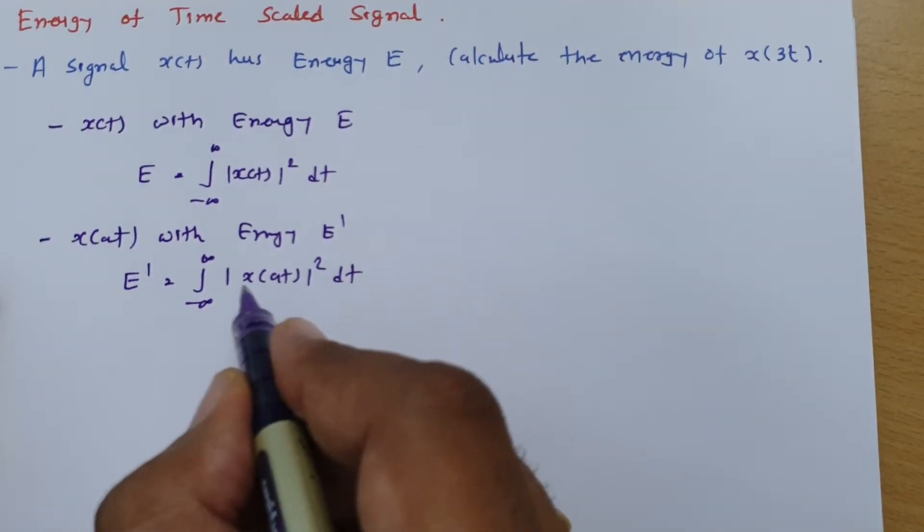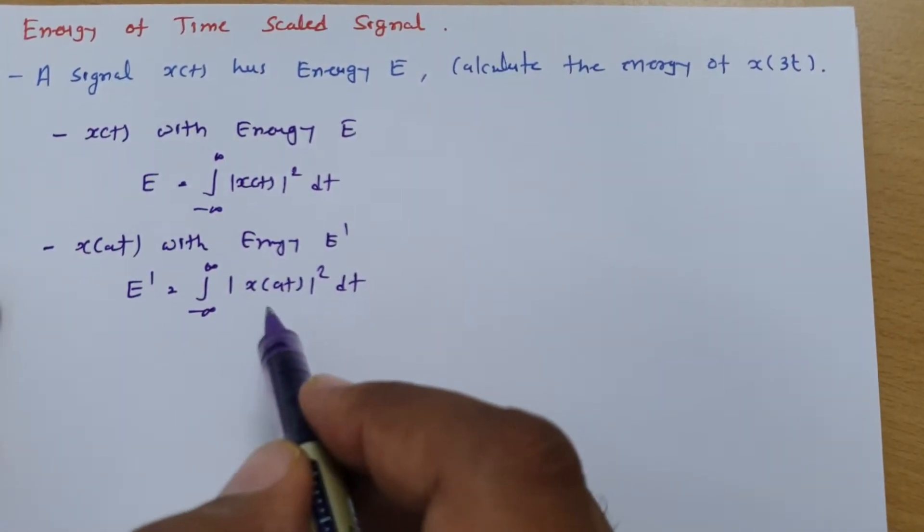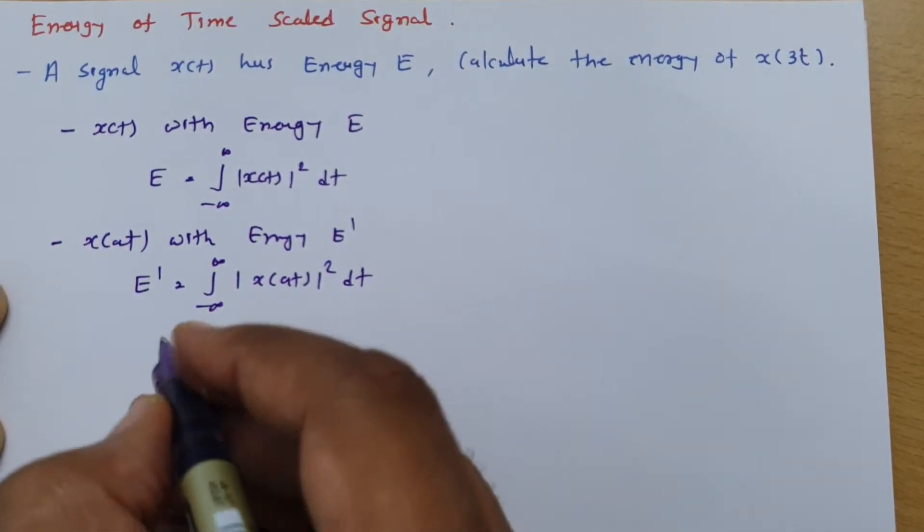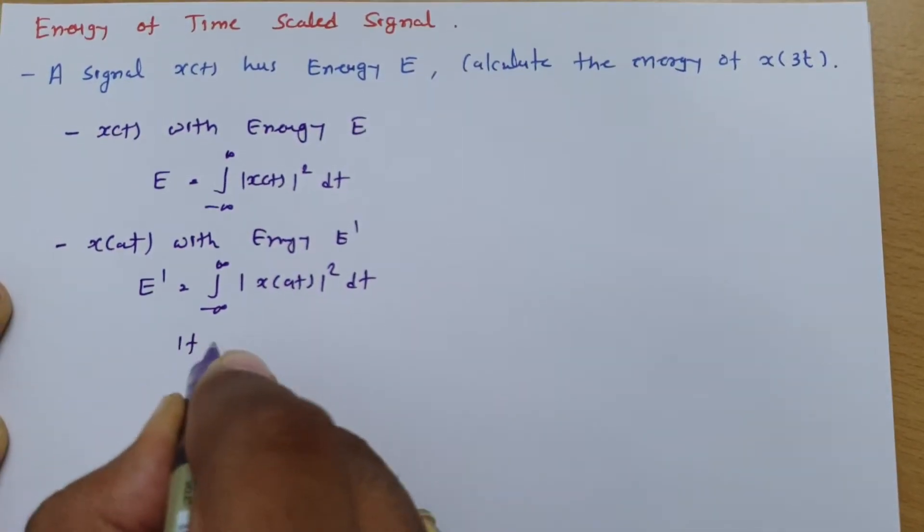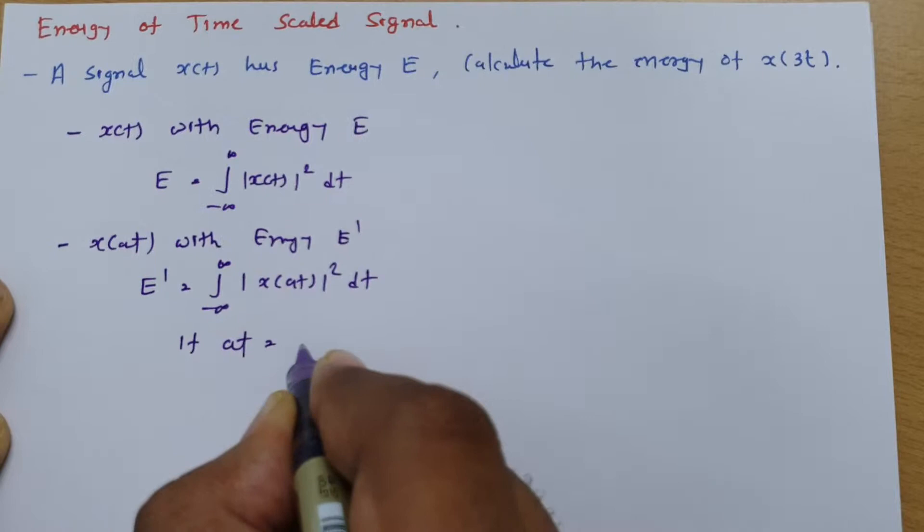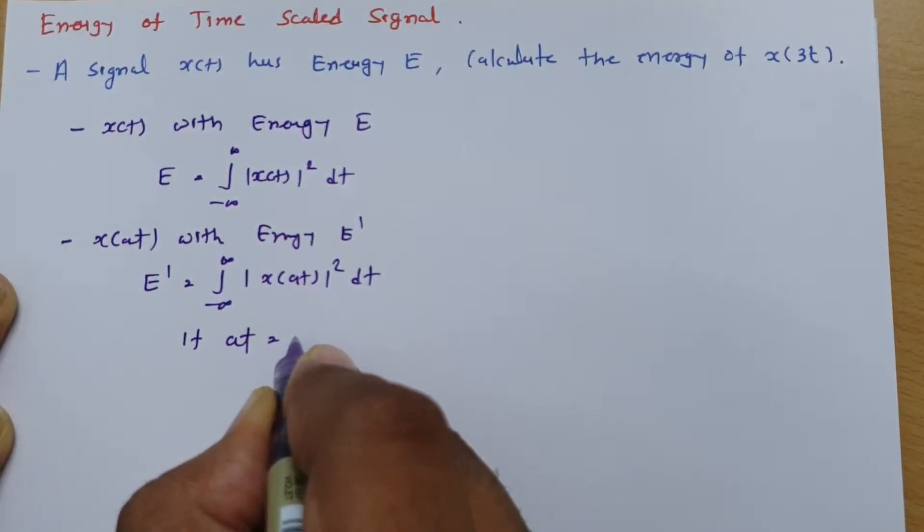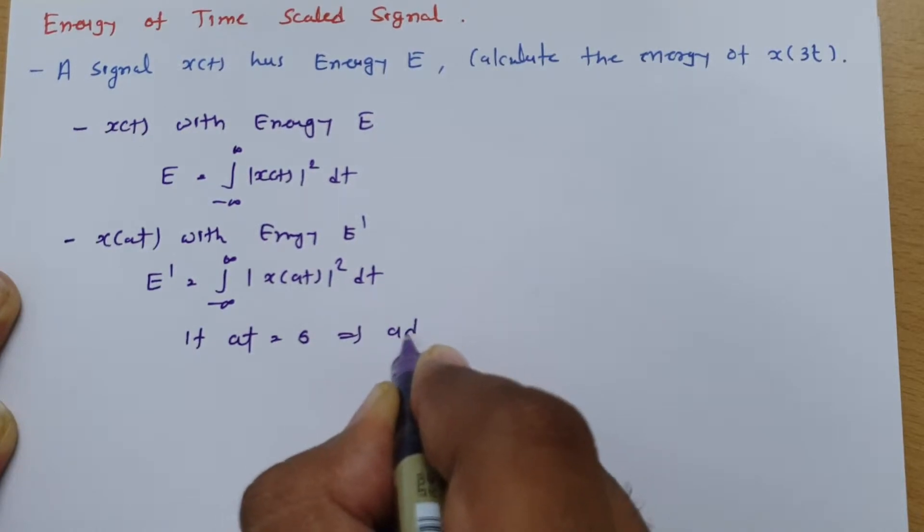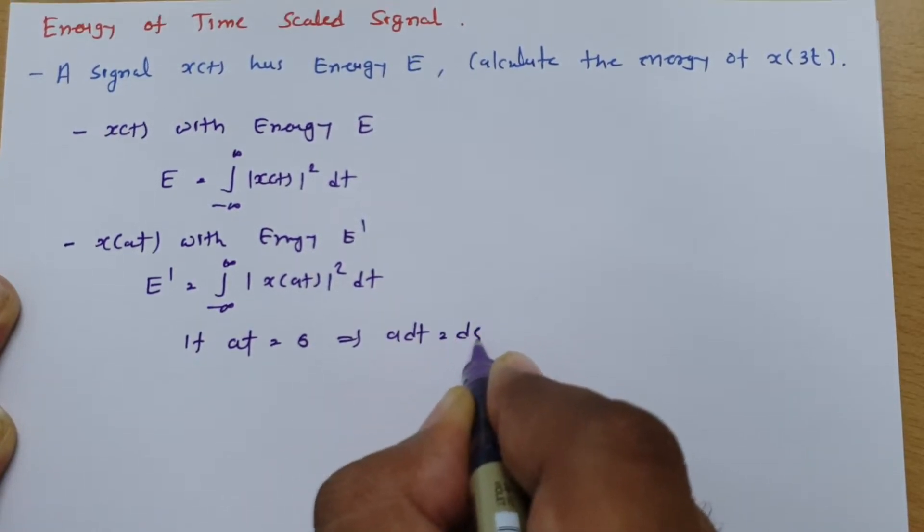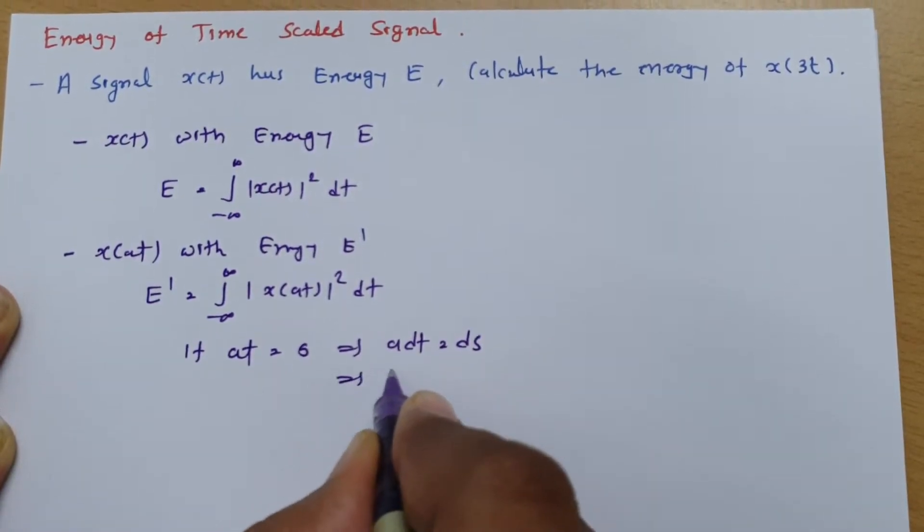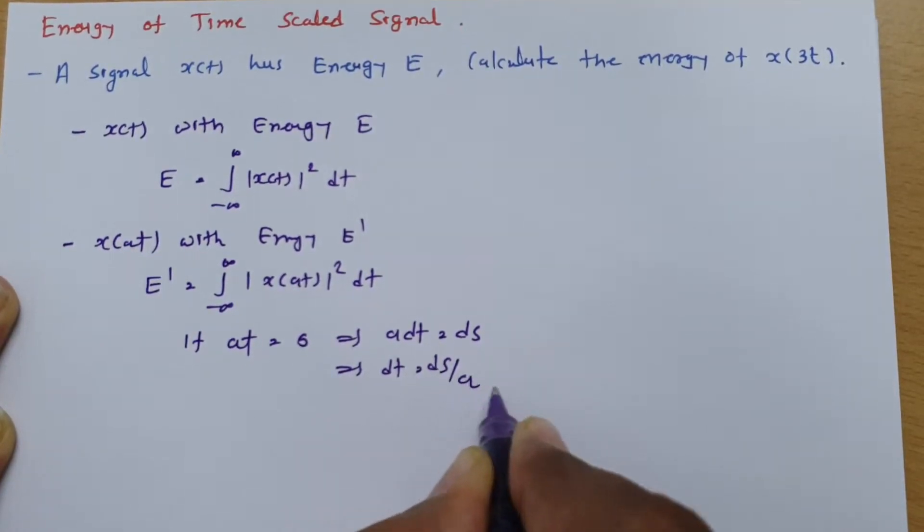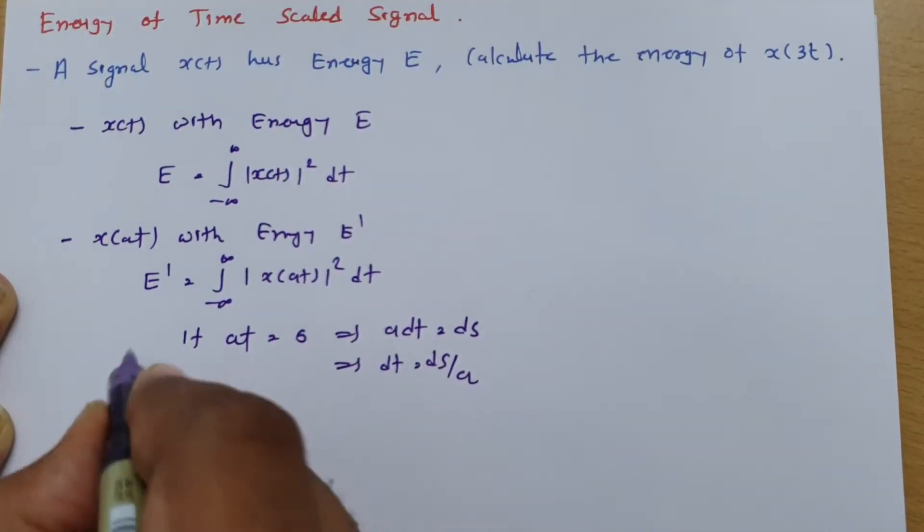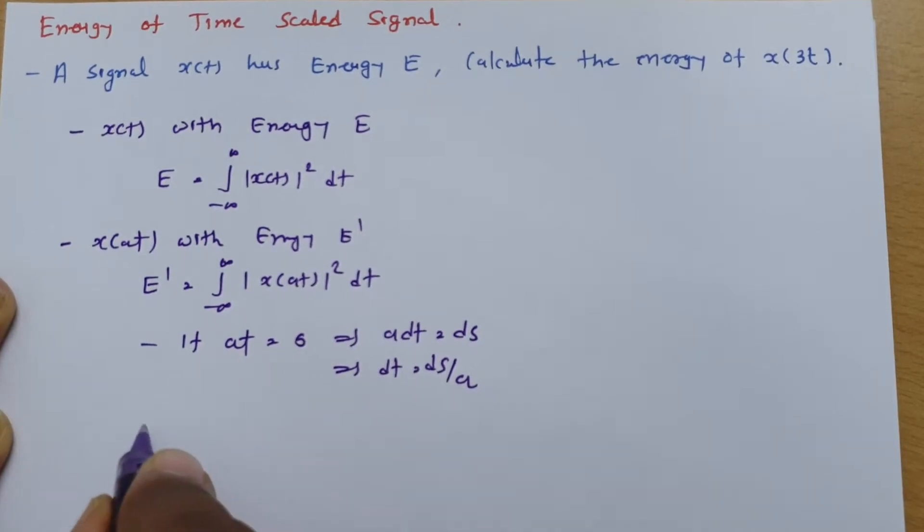Now to have this calculation in form of E, I will have to consider at equals one variable. So if I consider at equals s, then a dt equals ds. So we can say dt equals ds by a and limits will not change.